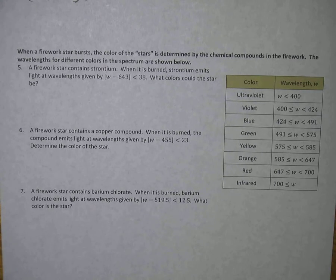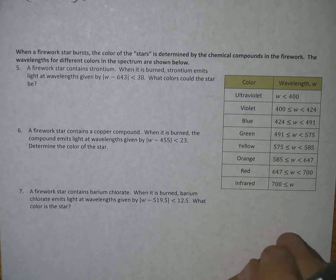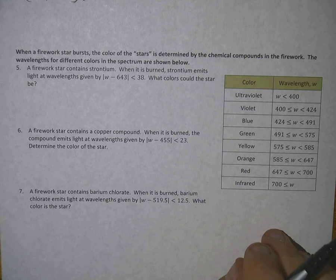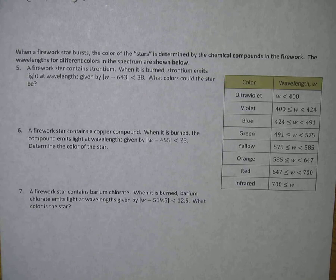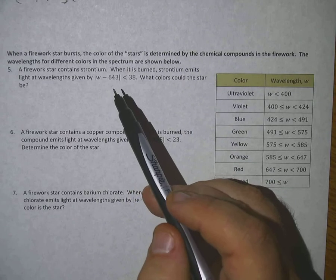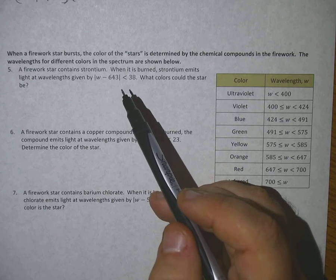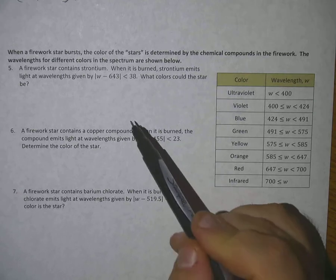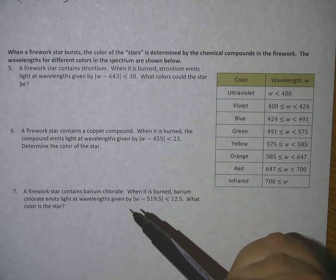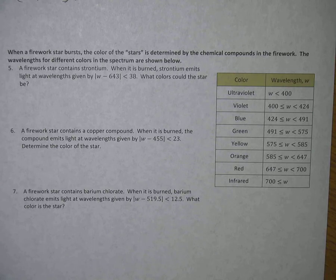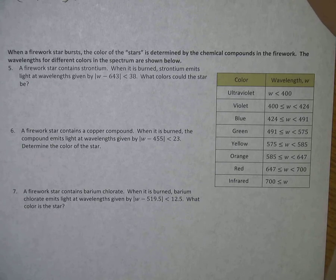For the last problem: when a firework bursts, the color of the stars is determined by chemical compounds. A firework star containing strontium emits light at wavelengths given by a certain inequality. All you have to do is solve that absolute value inequality — it will give a range of numbers that fits somewhere in the color spectrum shown. Good luck on the test, and feel free to ask if you have questions.